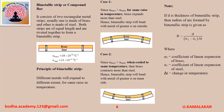Bimetallic strip, also known as a compound bar: it consists of two rectangular metal strips, usually one made of brass and other of steel. Both strips are of equal length and are riveted together. The principle is that different metals expand to different extents for the same rise in temperature. Since alpha of brass is greater than alpha of steel, for the same rise in temperature brass expands more than steel; hence the bimetallic strip bends with the metal of greater alpha on the outside. When cooled, brass contracts more than steel; hence the strip bends with the metal of greater alpha on the inner side.